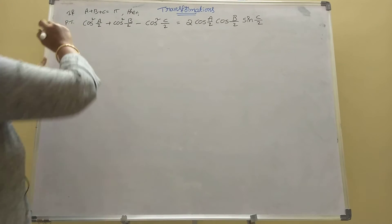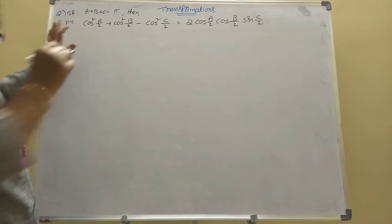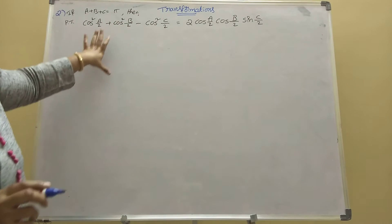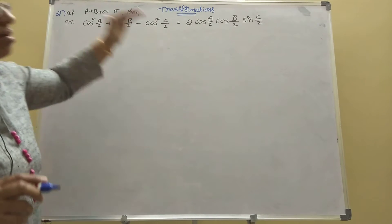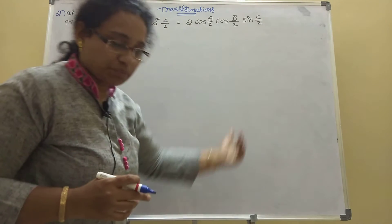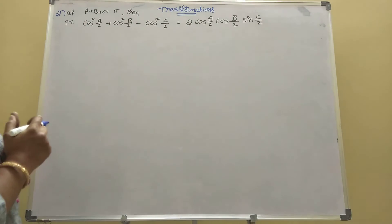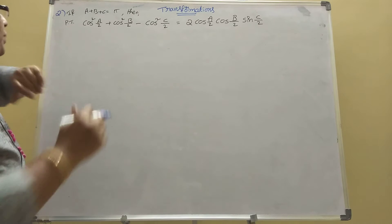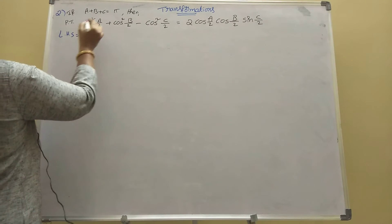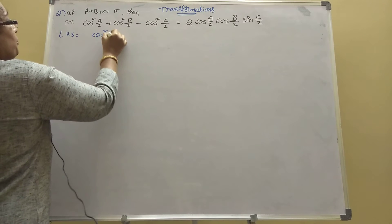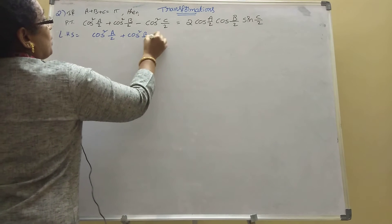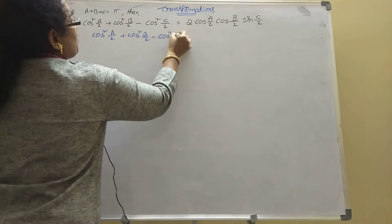The second sum is given. A plus B plus C equal to pi. Then prove that cos square(A/2) plus cos square(B/2) minus cos square(C/2) equal to 2 cos(A/2) cos(B/2) sin(C/2). We will prove that by taking LHS: cos square(A/2) plus cos square(B/2) minus cos square(C/2).